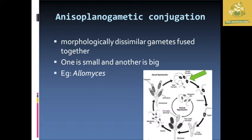In anisoplano gametic copulation, there are morphological dissimilarities when the gametes fuse together — one gamete is small and the other is large in size. In the picture, the smaller ones are the male gametes and the larger, darker ones are the female gametes. This is how the reproduction process takes place in these gametes.